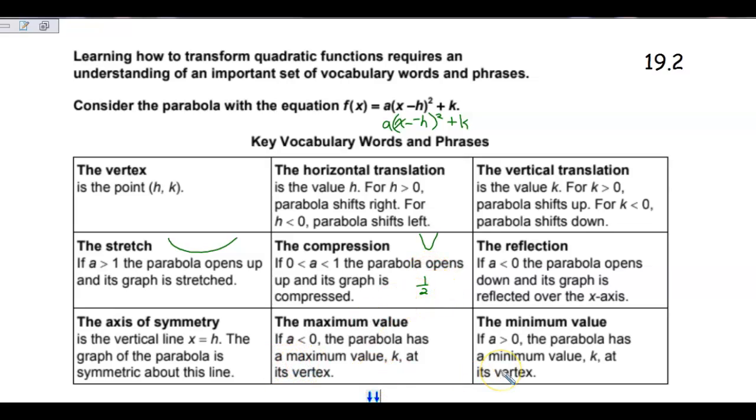So the reflection, if a is less than, so if a is a negative number, the parabola opens down, and it's reflected over the x-axis. So if it has a negative a, it is going to be a downward parabola.